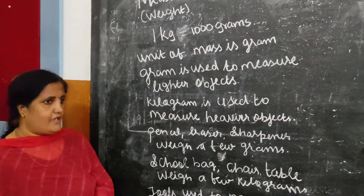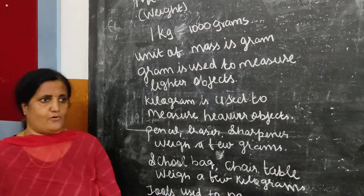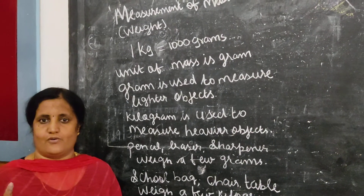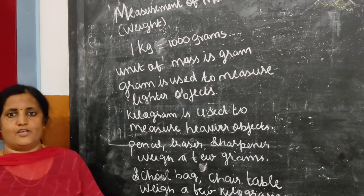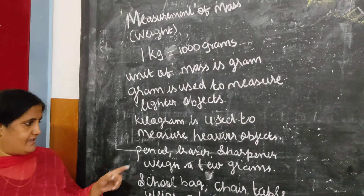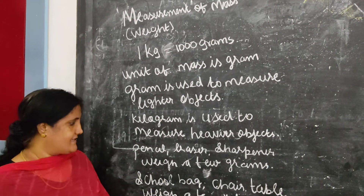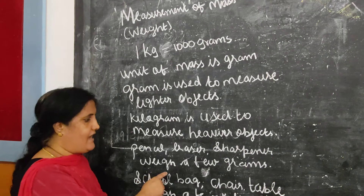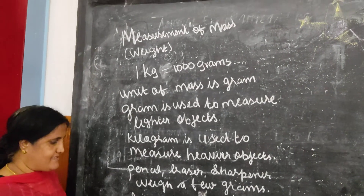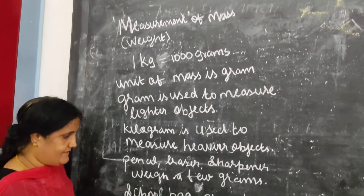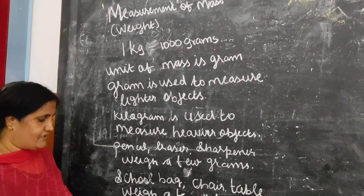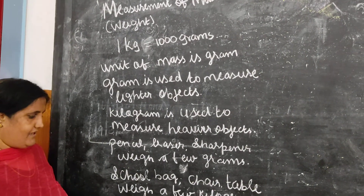For example, if you want to buy mustard seed, you buy a little, so there we use grams. Pencil, eraser, and sharpener are examples of objects measured in grams. School bag, chair, and cable are examples of objects measured in kilograms.